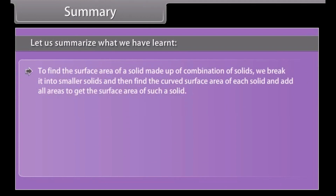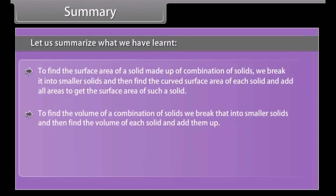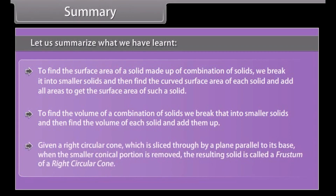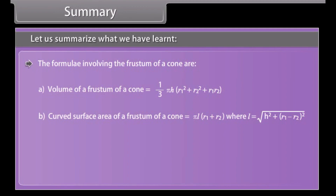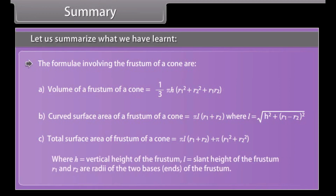Summary. To find the surface area of a solid made up of a combination of solids, we break it into smaller solids, find the curved surface area of each solid, and add all areas. To find the volume of a combination of solids, we break it into smaller solids, find the volume of each solid, and add them up. Given a right circular cone sliced by a plane parallel to its base, when the smaller conical portion is removed, the resulting solid is called the frustum of a right circular cone. The formulas involve H (vertical height), L (slant height), and R₁ and R₂ (radii of the two base ends of the frustum).